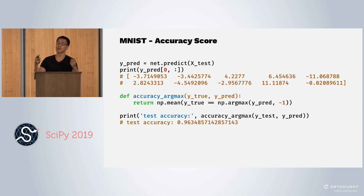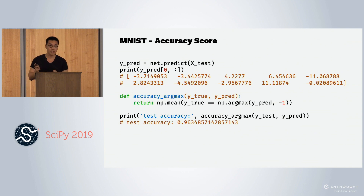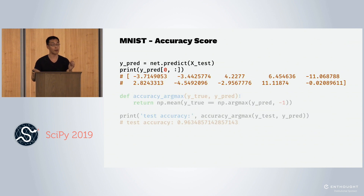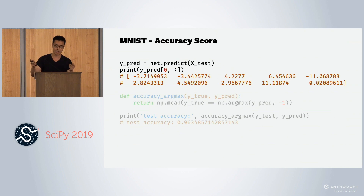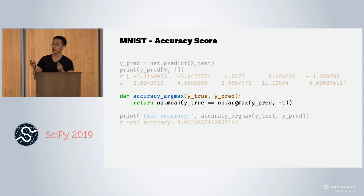Let's say you want to do more than record the loss — you want to compute accuracy. If you call predict on the neural net object, it gives out the raw output values of the module — in this case 10 raw logit values. So our metric has to understand this. To get the prediction from this raw value vector, we call argmax. This compares to the true value and gives you the accuracy score, which you can compute on the test dataset.